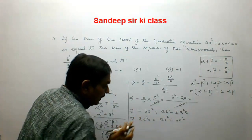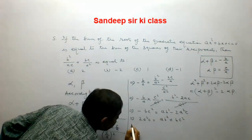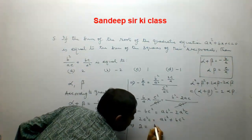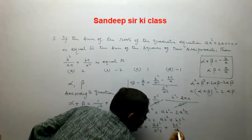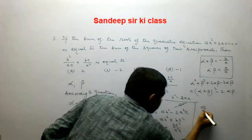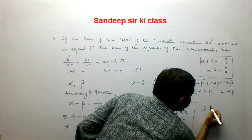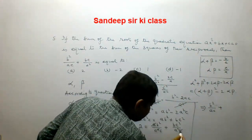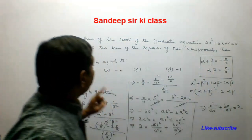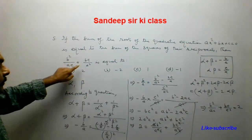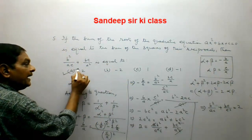Dividing the whole equation by a²c, we obtain 2 = ab²/(a²c) + bc²/(a²c), which simplifies to b²/ac + bc/a² = 2. So option A is the correct answer.